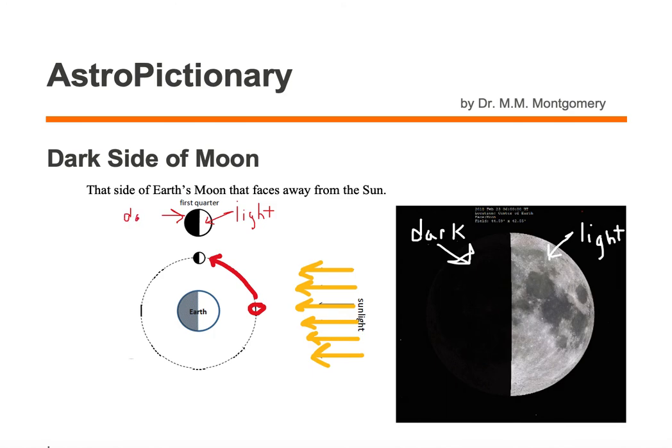The reason why it's the dark side is it's the side that faces away from the Sun. So as you can see, the sunlight's coming in, it strikes the lit side of the moon, and the side that faces away from the Sun is called the dark side of the moon.